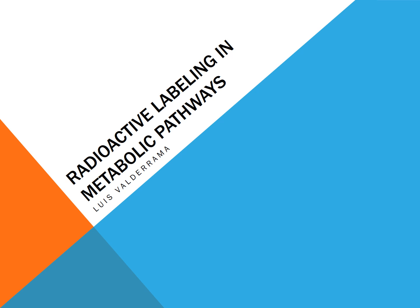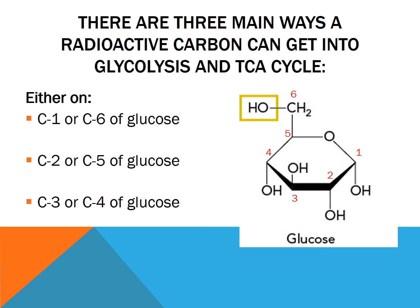Hey guys, so I'm going to be doing this quick video on how to follow radioactive carbons through glycolysis and the citric acid cycle. There are three main ways to get a radioactive carbon into glycolysis or the citric acid cycle: you can do it either through carbon one or carbon six of glucose, carbon two or carbon five of glucose, or carbon three and carbon four of glucose.